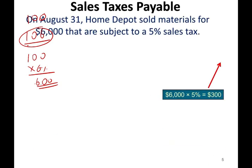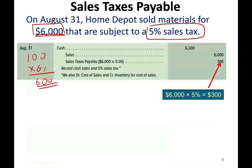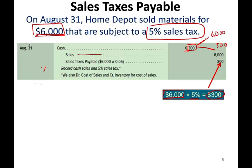On August 31st, let's assume Home Depot sold material for $6,000 subject to a 5% sales tax. The sale is $6,000, but Home Depot will collect from you an additional 5% in sales tax, so they collect $6,300 total. We break that as: $6,000 is the sale itself and $300 is the sales tax ($6,000 × 5%). We debit cash $6,300, credit sales $6,000, and create a liability called sales taxes payable for $300.